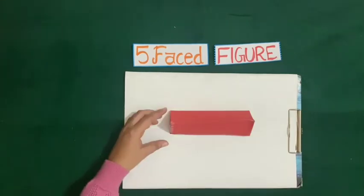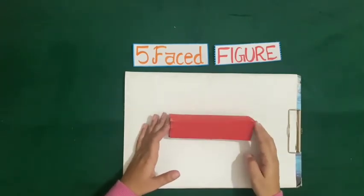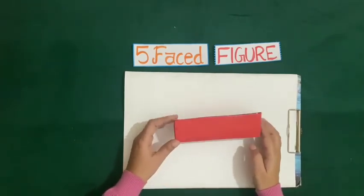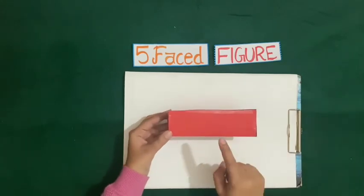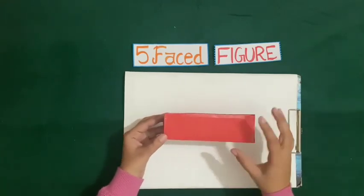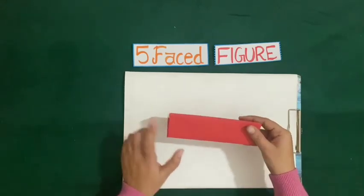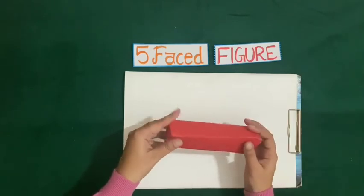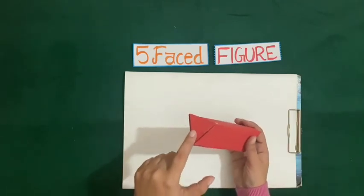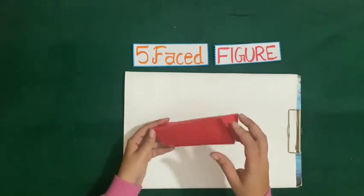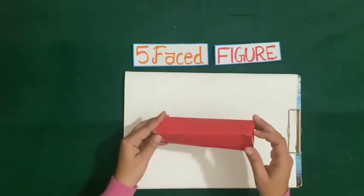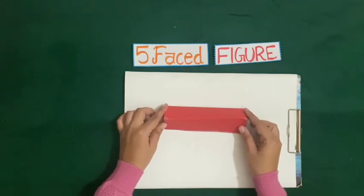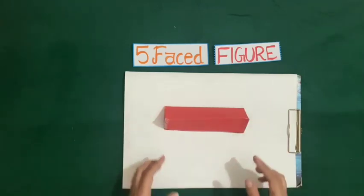And a five-faced figure is formed. Let us count: 1, 2, 3, 4 and 5. So this is a five-faced figure called prism.